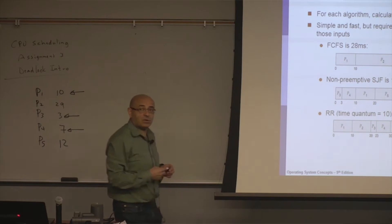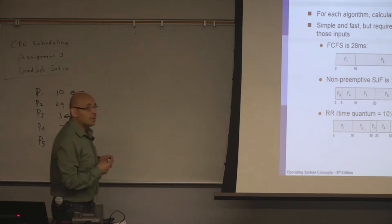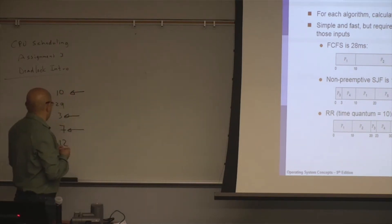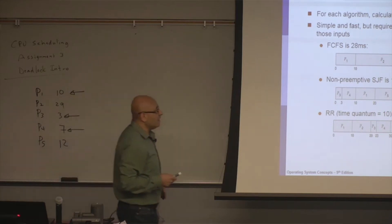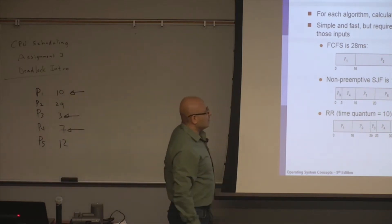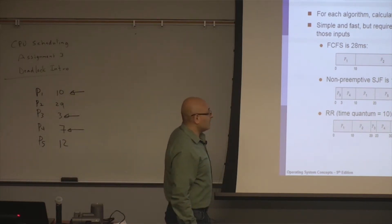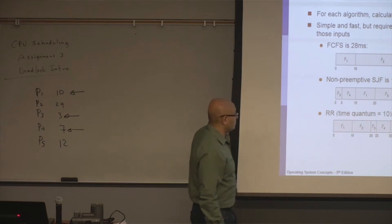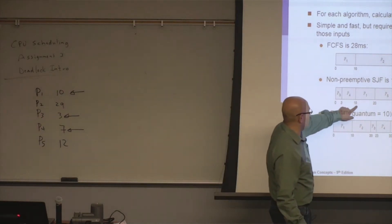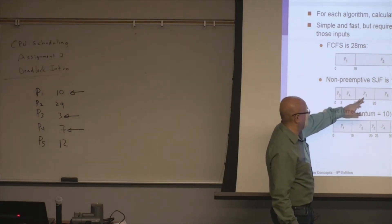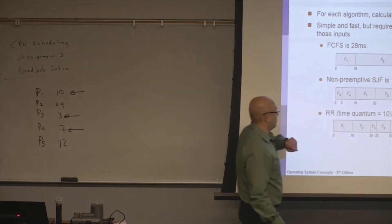We just order them by the length of the CPU burst. Calculating the waiting time for each process is straightforward: for P4 it's 3, for P1 it's 10, and so forth.